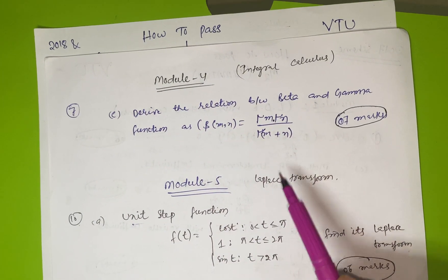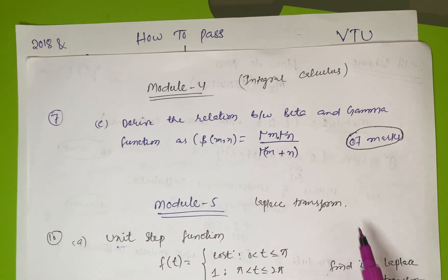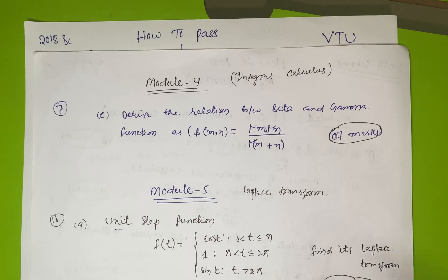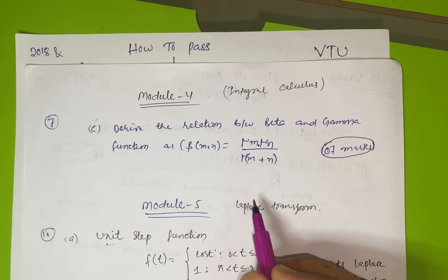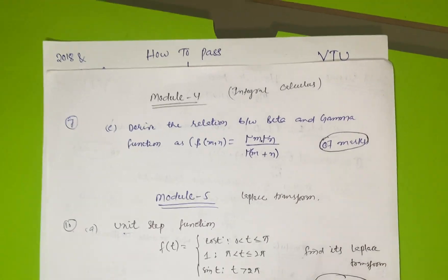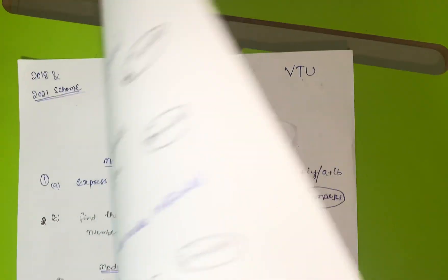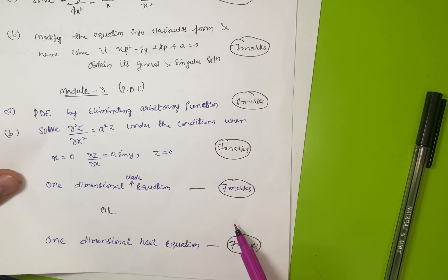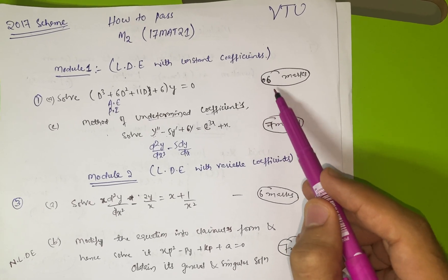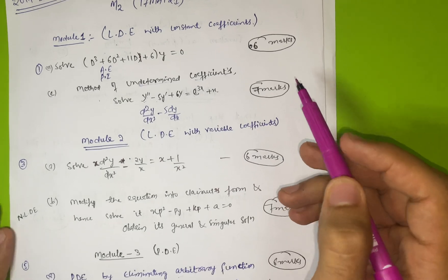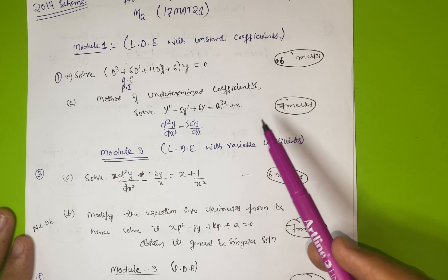You have to attempt all the modules, don't leave any module. If you don't know other questions, just write the given data, you'll get one mark. Let's count the marks now: 13 + 7 = 20, 20 + 20 = 40, 40 + 13 = 53, 53 + 7 = 60, 60 + 6 = 66. Students, isn't it amazing that you're getting 63 marks out of 100 without going in depth in this subject?